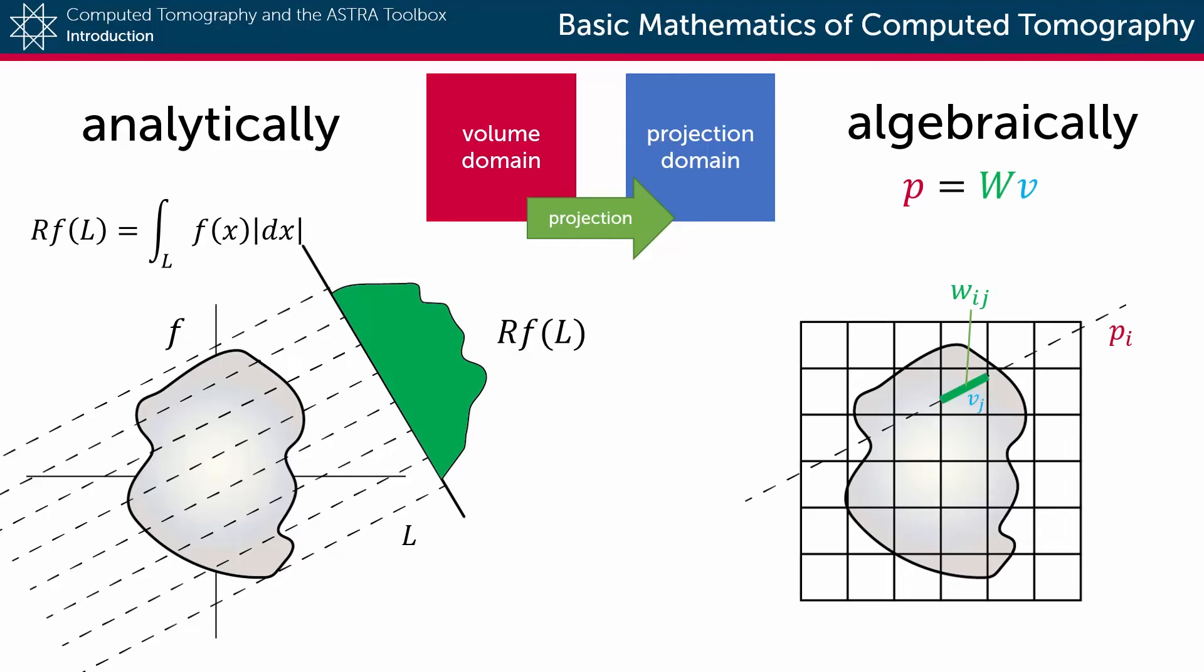In the algebraic case, a forward projection is defined by a matrix-vector multiplication: P equals W times V, where P is a vector representing all of the detectors on all of the projection angles, V is a vector representing all of the pixels of the volume, and W is called the projection matrix.